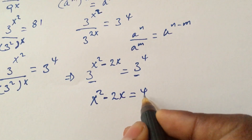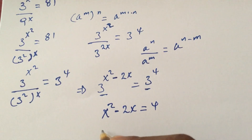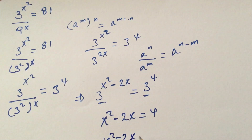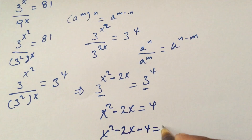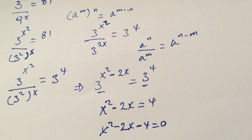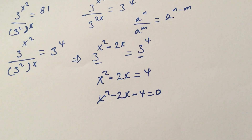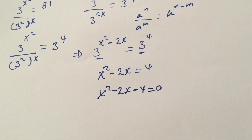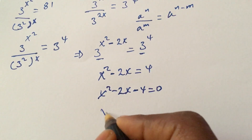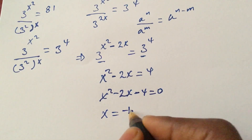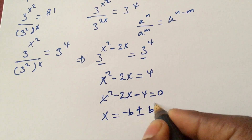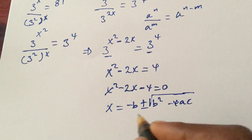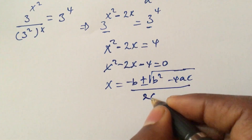We move 4 to the left side to get: x squared minus 2x minus 4 equals 0. Then we apply the quadratic formula: x equals negative b plus or minus the square root of b squared minus 4ac, all over 2a.